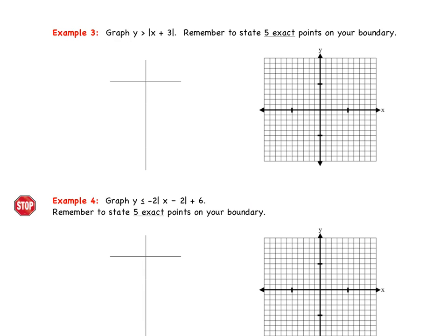All right, so now we're going to focus on graphing y > |x + 3|, stating 5 points on our boundary. So we treat this as if it were the equation y = |x + 3|. So we always start by stating the vertex. So remember from the other day, our vertex is (h, k), the opposite of what's inside with x. And then our k value. Well, our k value is really a 0. So our vertex is (-3, 0).